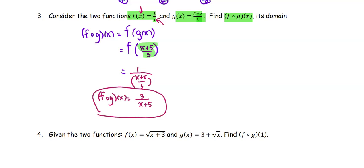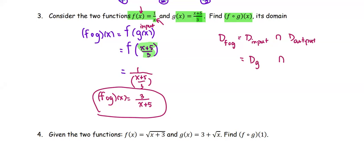Next, we're going to find the domain. The domain of the composite function is a bit tricky. The domain of f∘g is the domain of the input intersected with the domain of the output. The very first input comes from the function g, so this is the domain of g intersected with the domain of the output — which is the end result, 3/(x + 5).